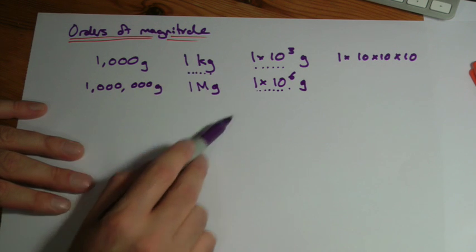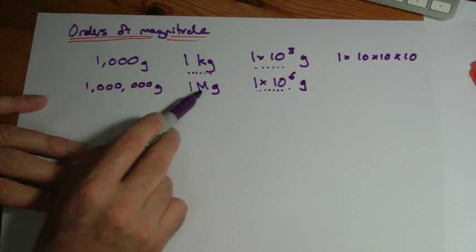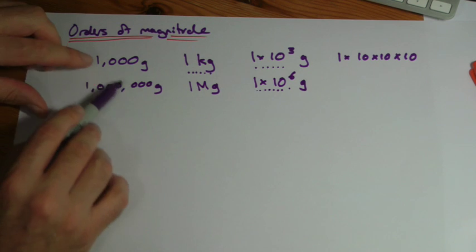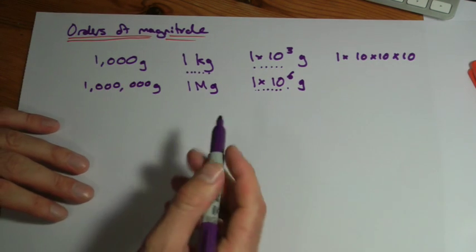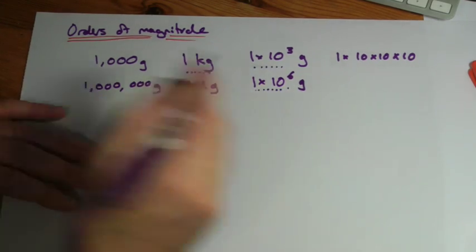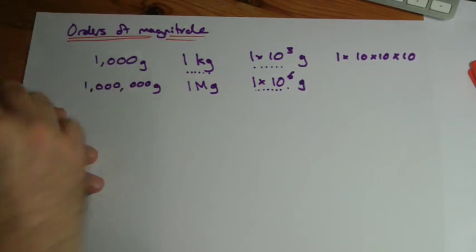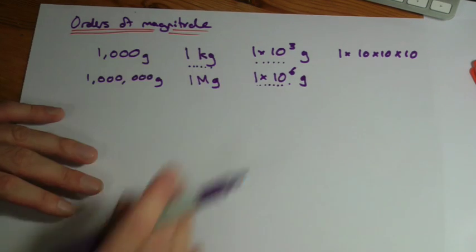And these units actually tend to go up in threes, so kilo, mega, thousand, million, three extra noughts. Kilo, mega, and it continues. You get tera and you get peta, you're probably familiar with this with the computers. But it does go up, and also goes down as well, and we'll look at that next.